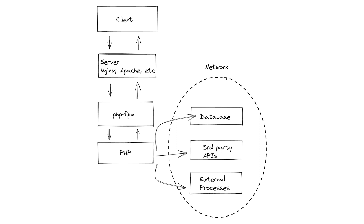A client makes a request. That request goes into a server — Nginx, for instance. Then that request goes into PHP-FPM, which is a process manager. And then that request hits PHP — your application. And on your application, you might make lots of calls. You might call a database, you might call a third-party API, you might call an external process.